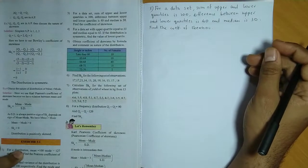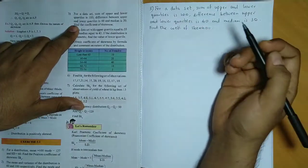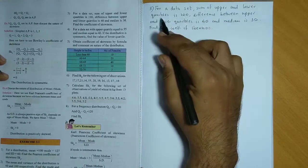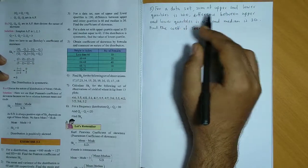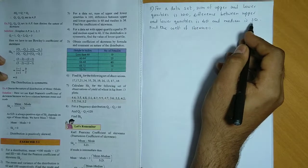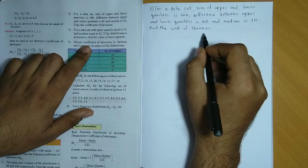Now let's discuss exercise 3.1 question number 3. For a data set, the sum of upper and lower quartiles is 100, and the difference between upper and lower quartiles is 40, and median is 30. So median value is 30. Find the coefficient of skewness.